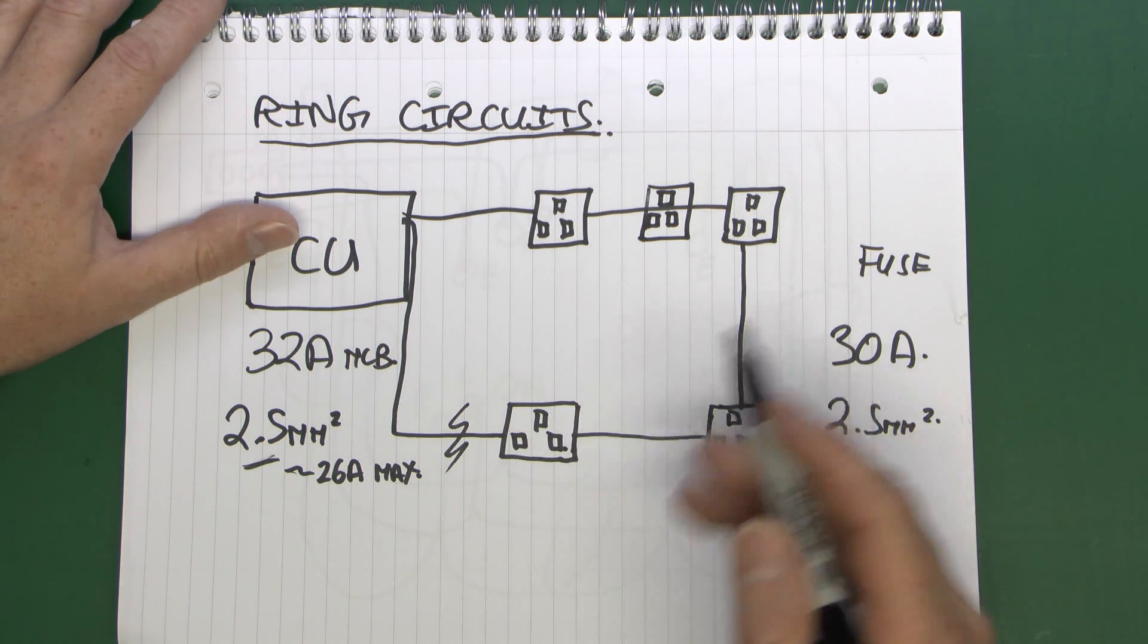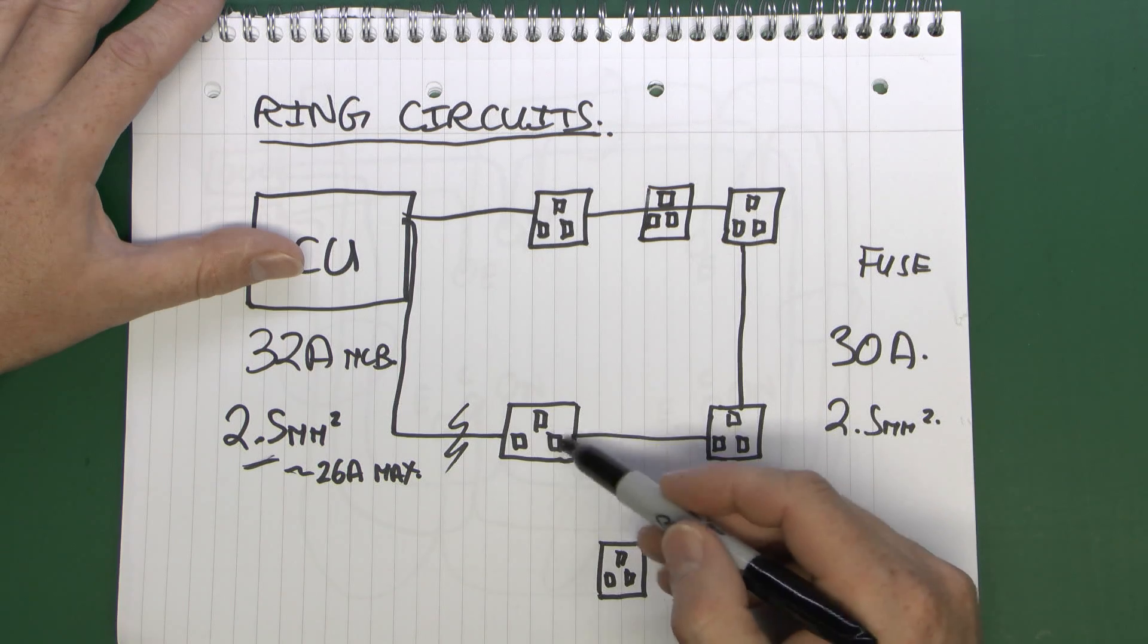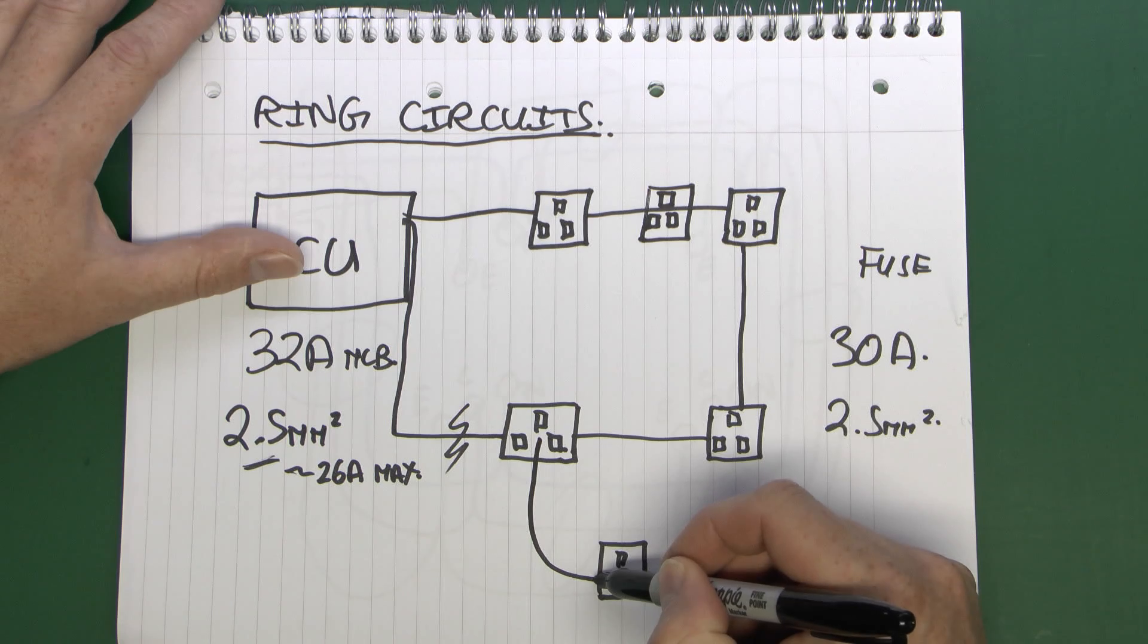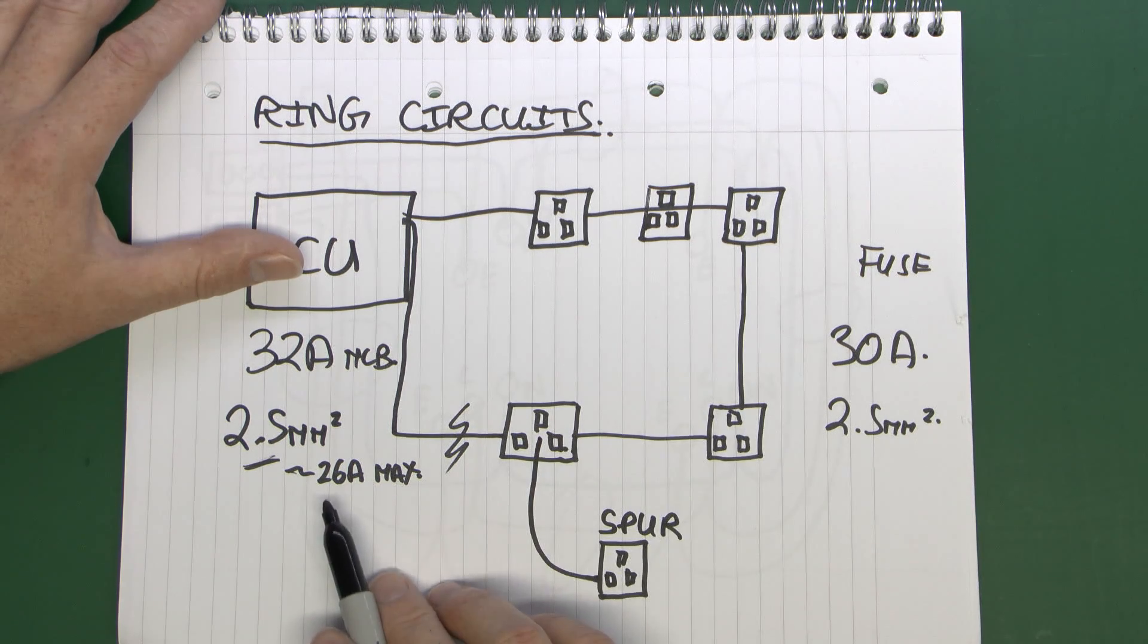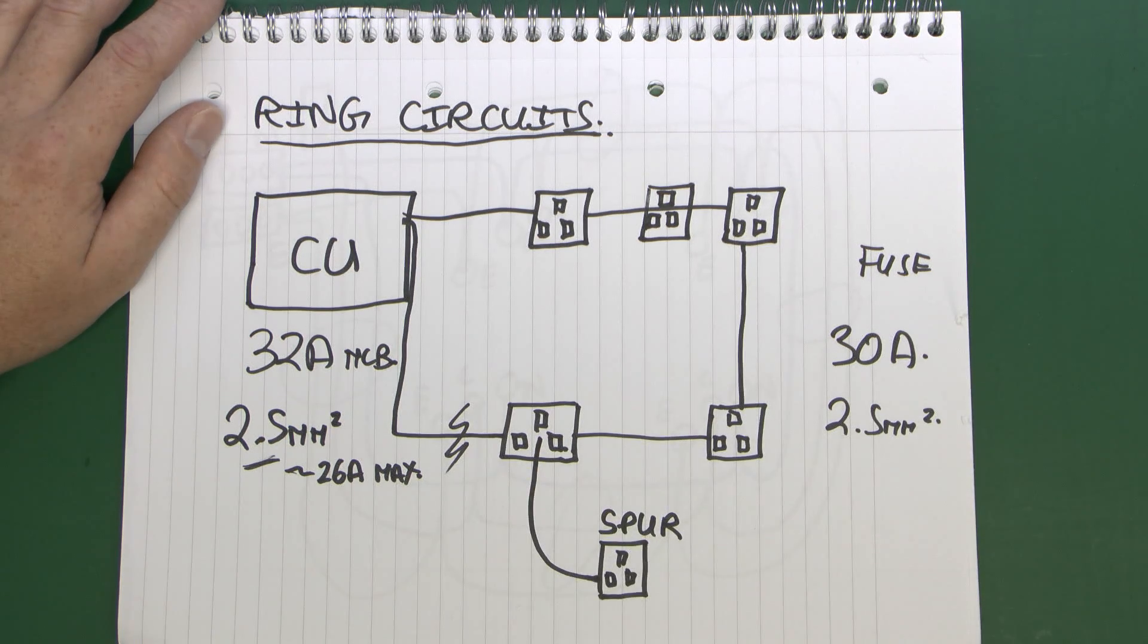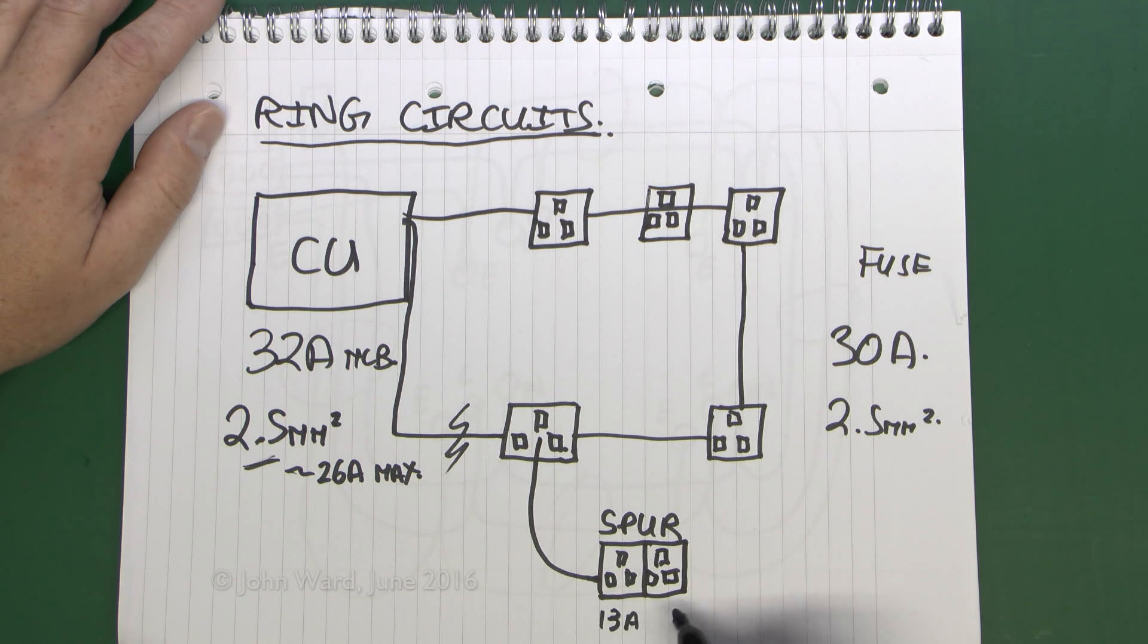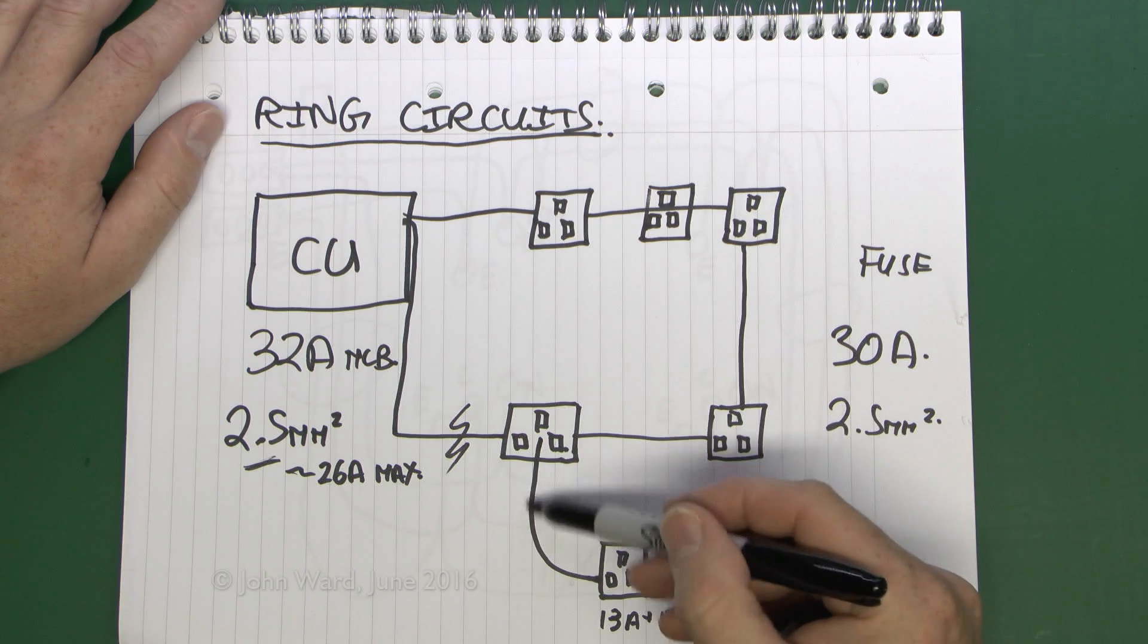A spur would typically be taken from, say, one of the existing sockets. So you might want to put a socket over here. Instead of taking both the wires to that, which would involve rather messy connections in the back here, what you can actually do is connect a wire to the back of this socket and just bring it over here like that. That would then be called a spur. And it's only supplied by a single cable. However, in this case it's not actually going to be overloaded because you've only got a single socket here on the end of it. Your twin-in-earth cable is typically rated around 26 amps. If this is a single socket, the plug that goes in here is going to have a 13-amp fuse in it.